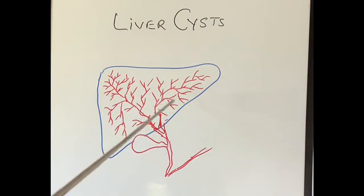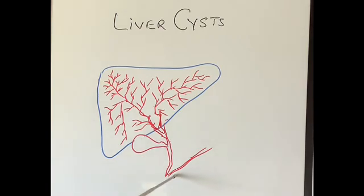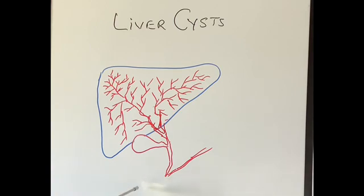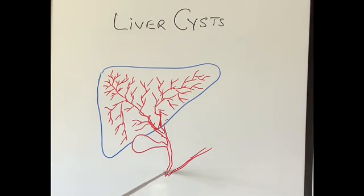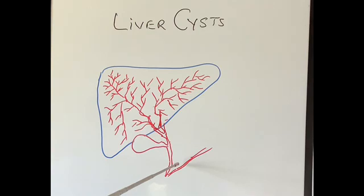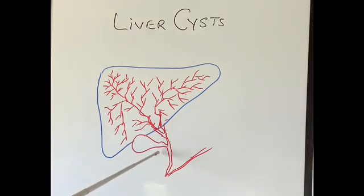The second function of the bile is to help digest our foods, especially fats. When the bile comes into our small intestine, it helps mix with our food and absorb fats. On the side of the bile duct is the pancreatic duct coming from the pancreas, and there is also a little pouch called the gallbladder.